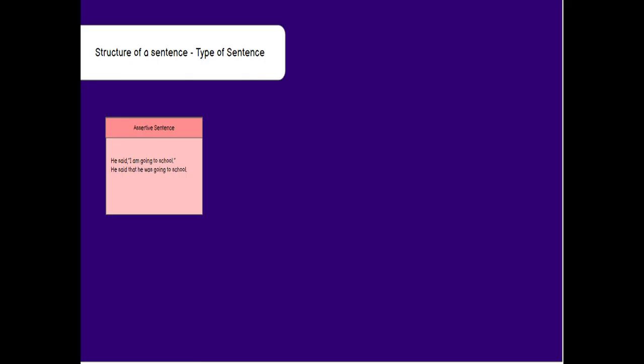Now let's see changes in the structure of a sentence according to the type of sentence. First, assertive sentences — sentences which give us normal information. For example, 'He said I am going to school' becomes 'He said that he was going to school.' There is no major change in structure — the subject-verb-object format remains the same. So in assertive sentences, while converting from direct to reported speech, there is no significant change in sentence structure.